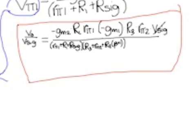This equation is minus GM2, RL, Rpi1 minus GM1, R3, Rpi2 all over the quantity Rpi1 plus R1 plus Rsig times the quantity R3 plus Rpi2 plus RE times beta plus 1.